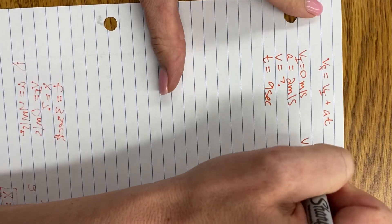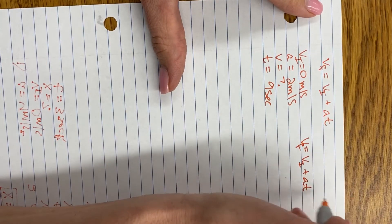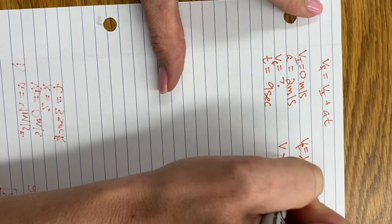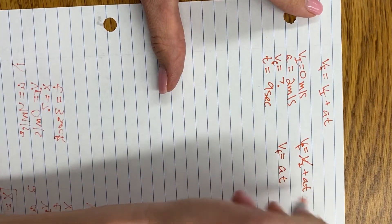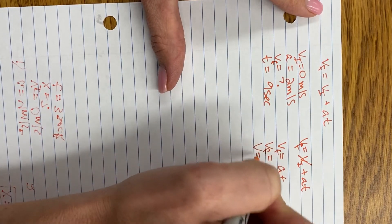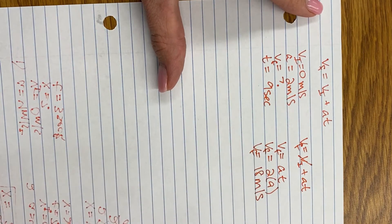So my equation, I have no initial velocity. My final velocity is going to be my acceleration times time, so two times nine. It will give me 18 meters per second.